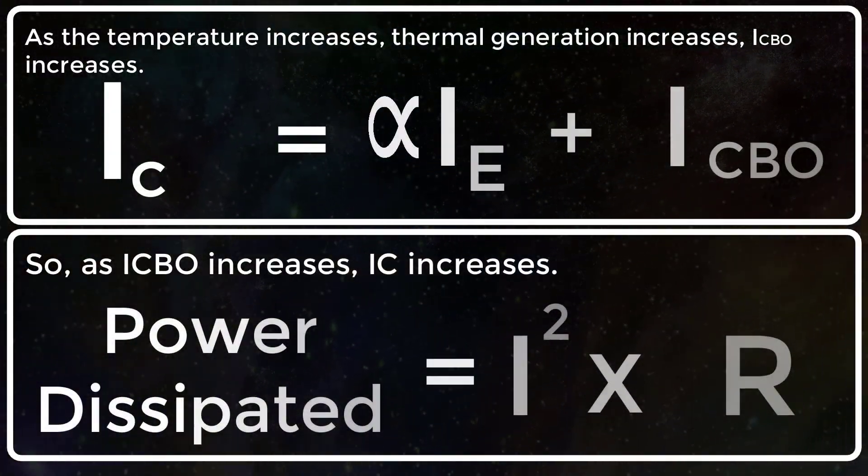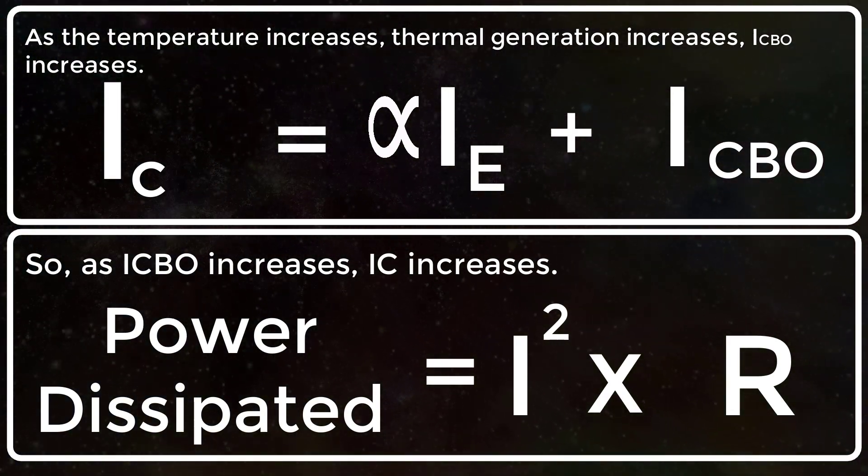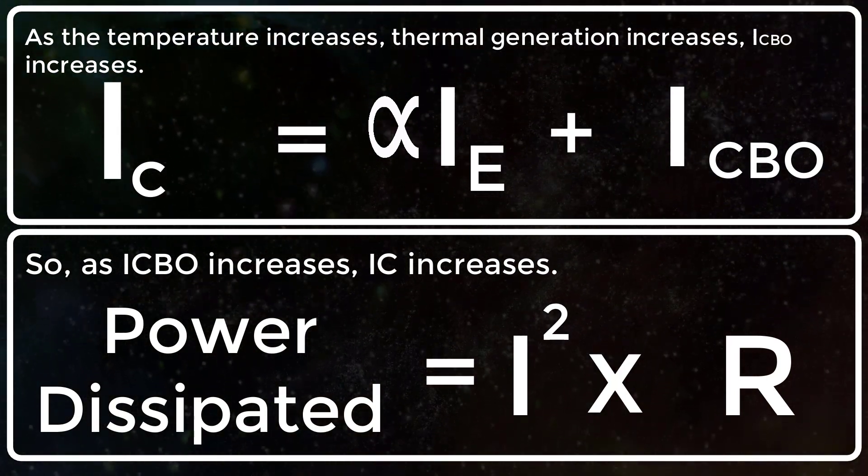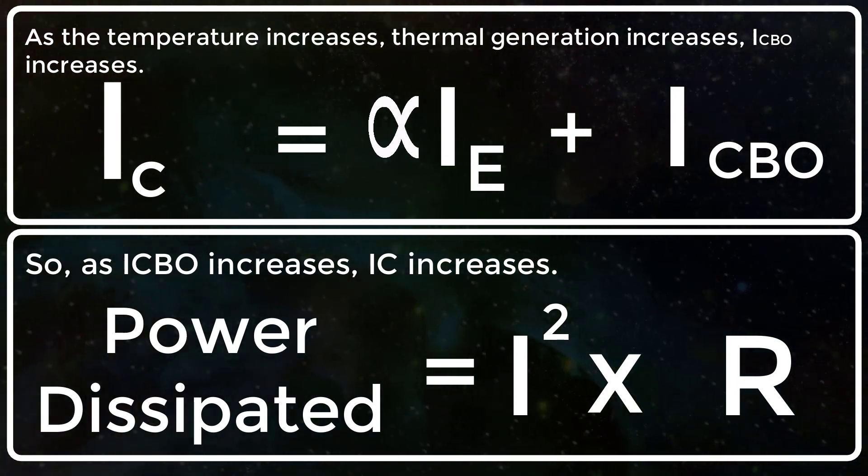As the temperature increases thermal generation increases, ICBO increases. IC equals alpha IE plus ICBO. So as ICBO increases, IC increases.